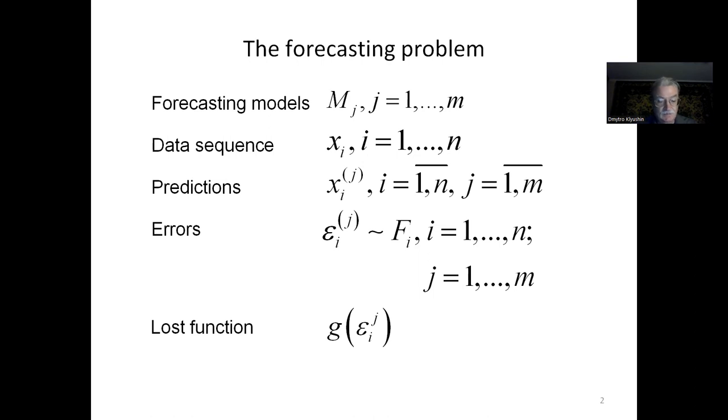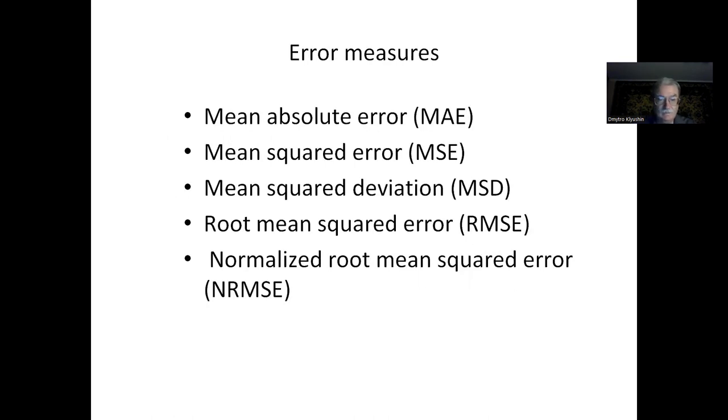There are several error measures for forecasts: mean absolute error, mean squared error, mean squared deviation, root mean squared deviation, and normalized root mean squared deviation.